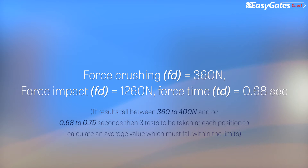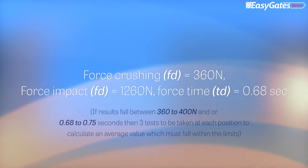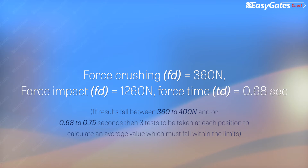If any values exceeded the 90% limit, each test should be repeated three times and the average value calculated for each measurement point. If the average value is still above the 90% threshold limit, it is recommended to assess what could be causing this — for example, motor force too high, safety edge profile too shallow, or a transmission system latency — and then re-test. This applies to all gate and barrier types.